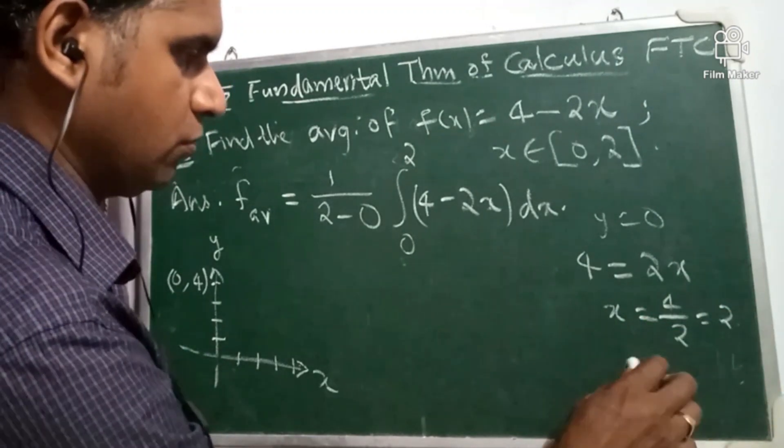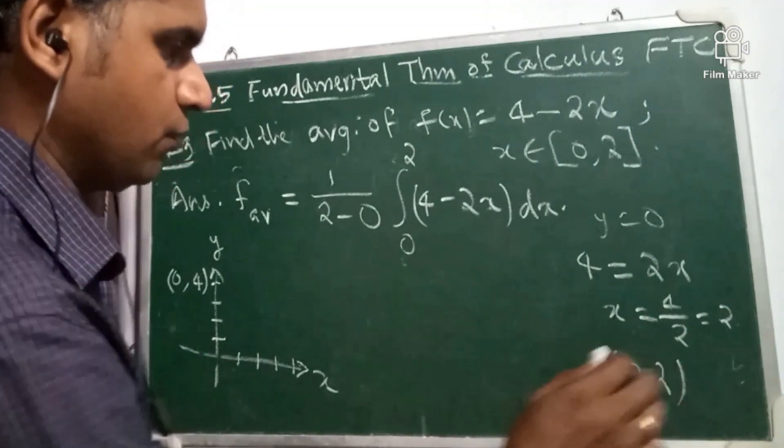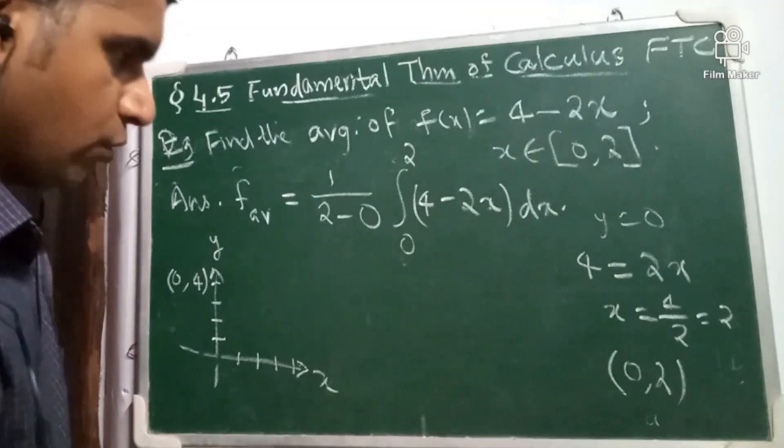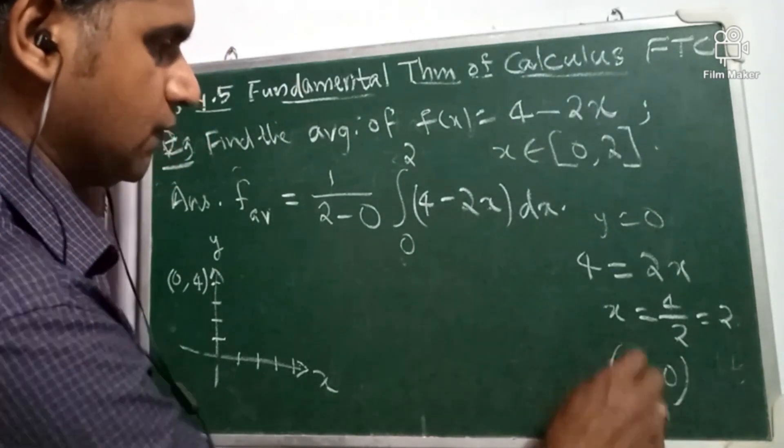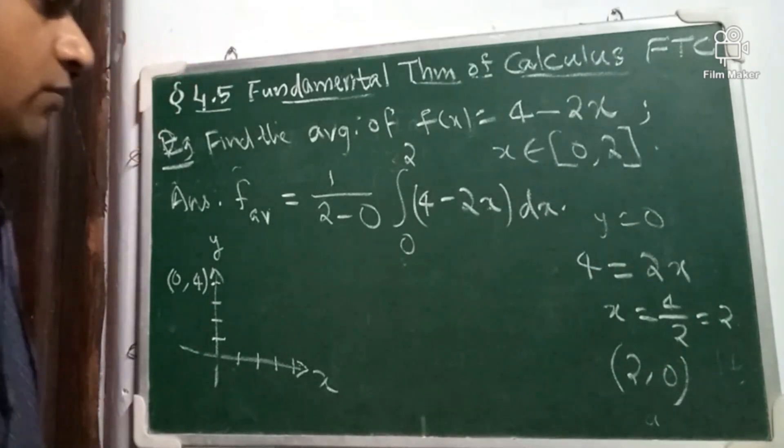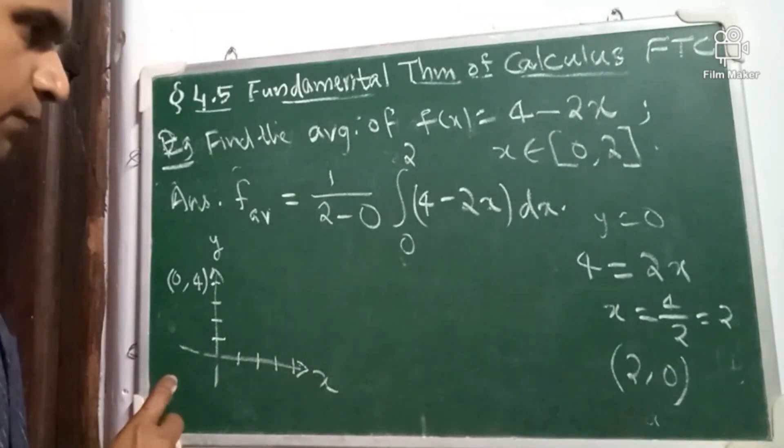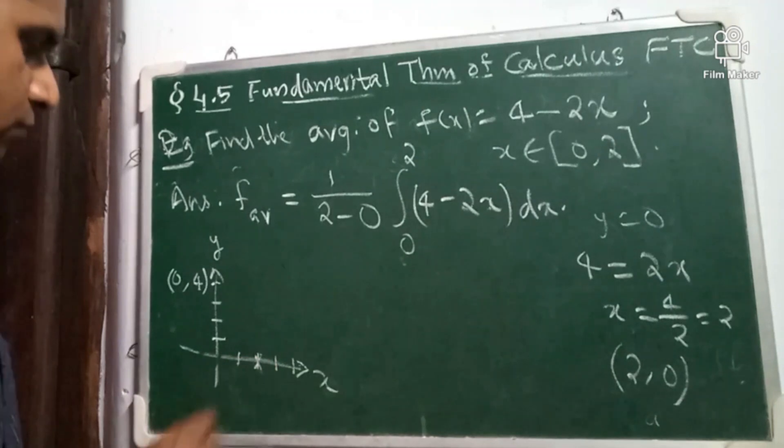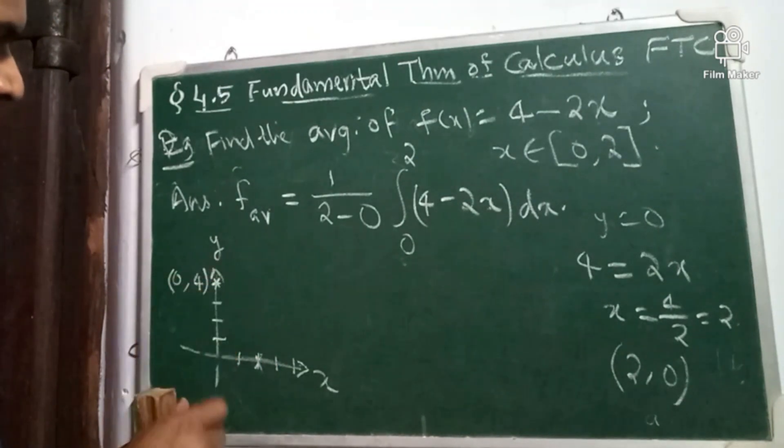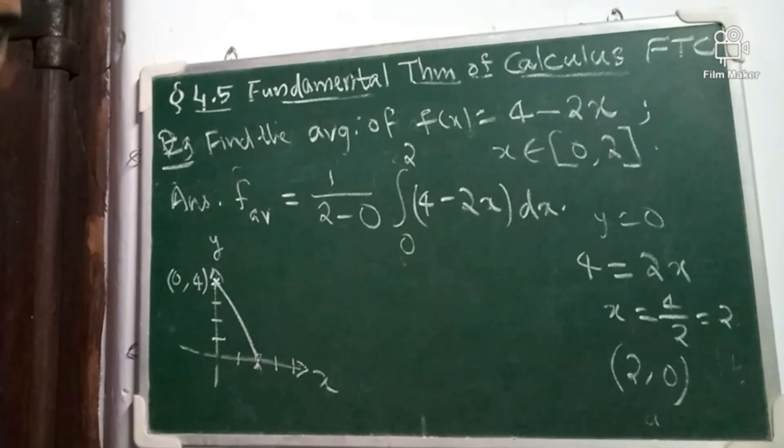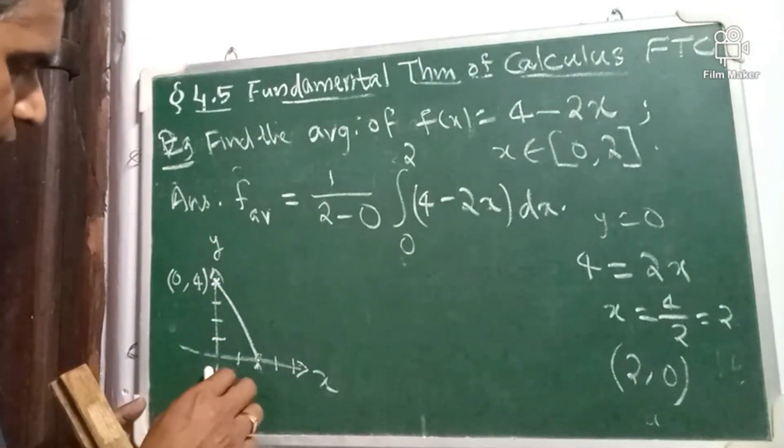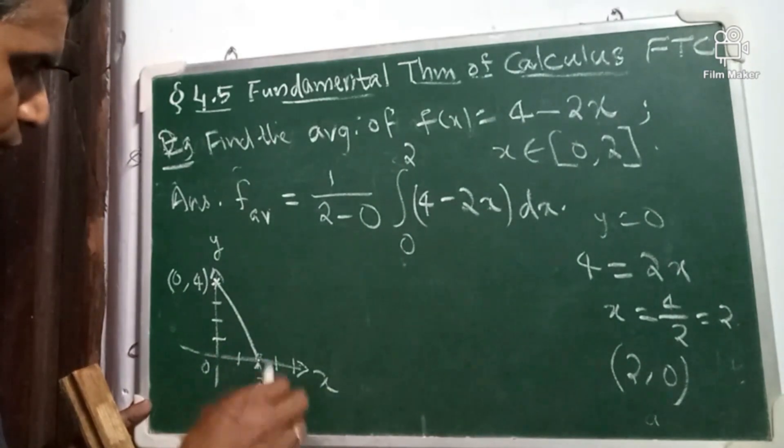Therefore, the curve passes through 2, 0. This is the point 2, 0. So, this is the point 2, 0 is x is equal to 2.